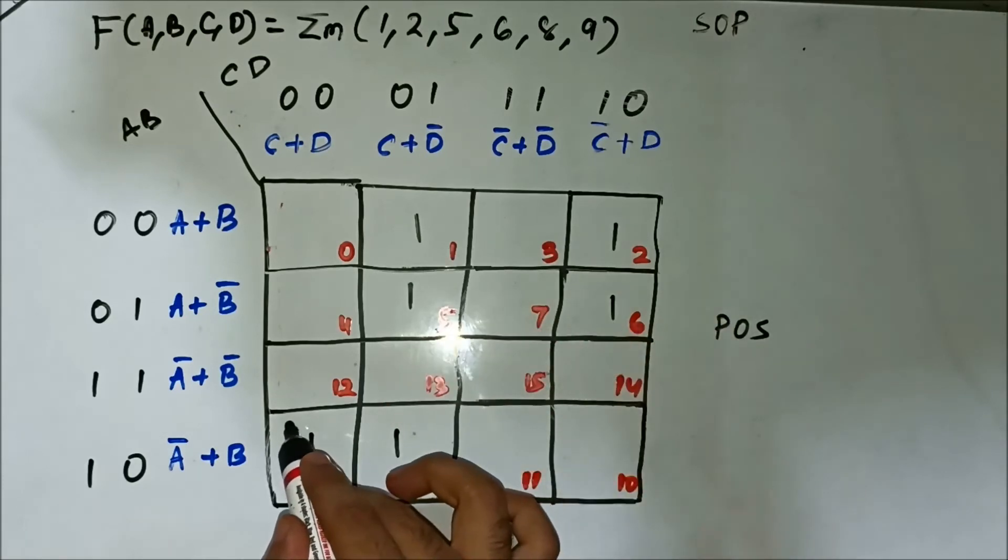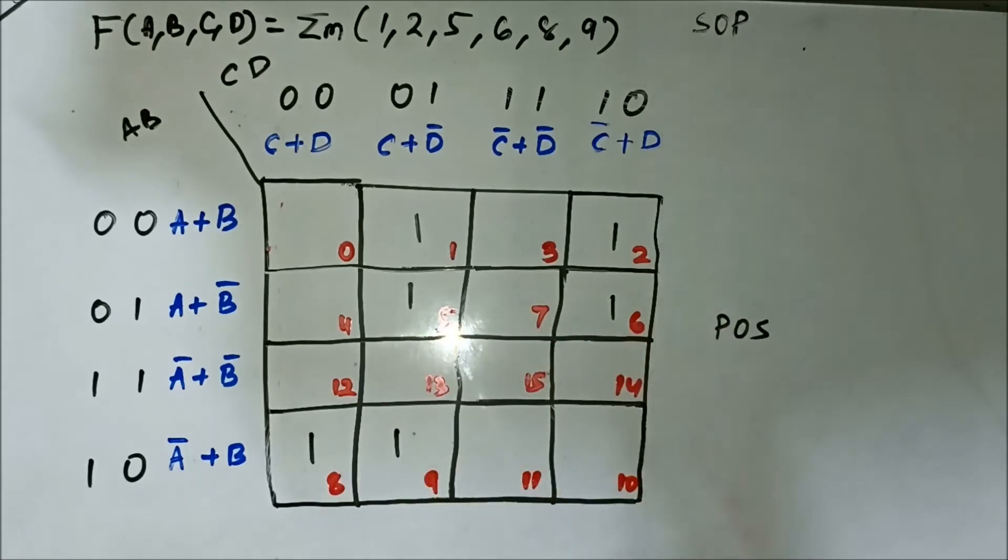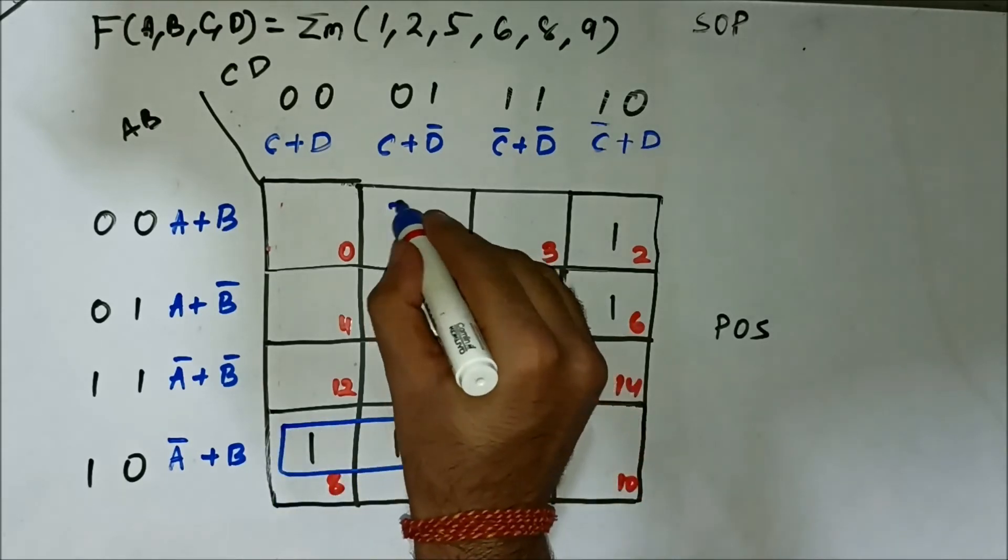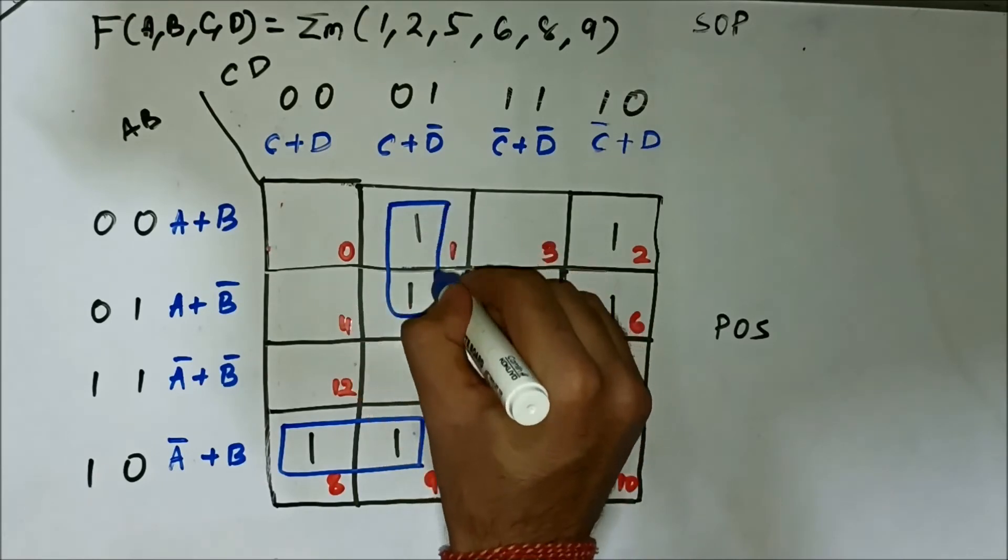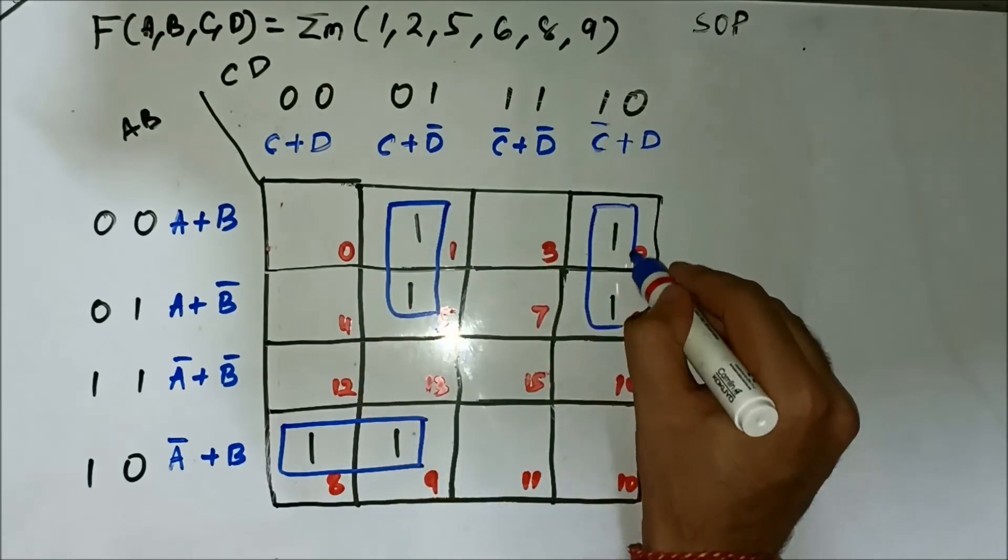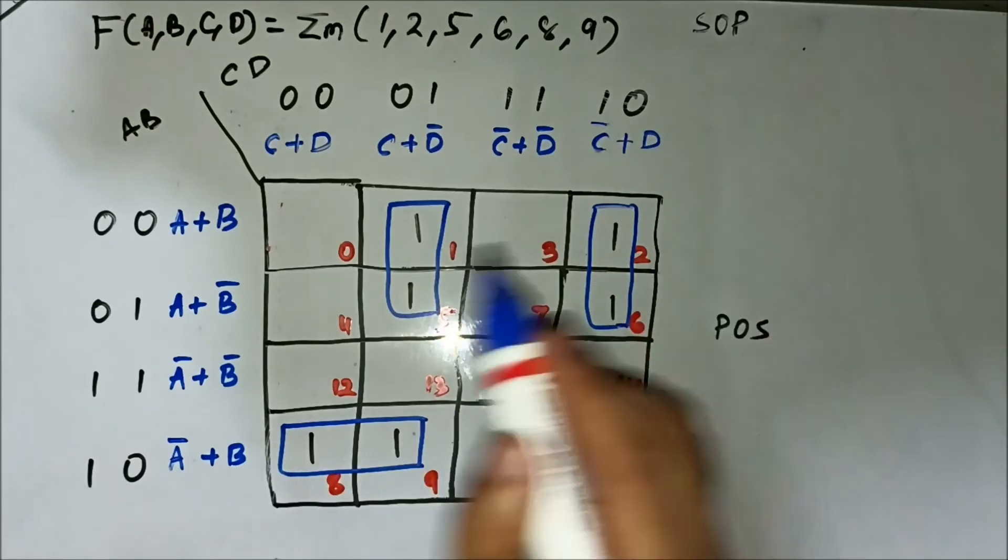Here, straightforward, we can form pairs. Three pairs can be formed. This is one pair. This is one pair. And this is one pair.